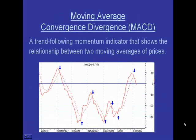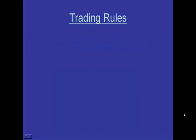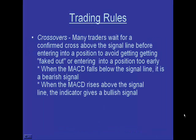Next, we have MACD — Moving Average Convergence Divergence. It's a trend-following momentum indicator that shows the relationship between two moving averages of a price. We have a fast and slow line — a dashed and a solid line. Signals are given when one line crosses either down or up through the other. A downward cross means sell; an upward cross means buy. When MACD falls below the signal line it's considered bearish; when it rises above the signal line it is considered bullish.